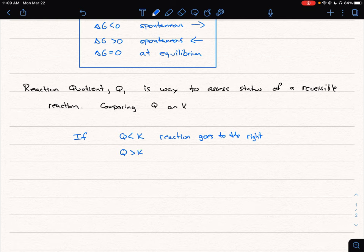If Q is greater than K, then our reaction goes to the left. We're going to have to make Q a smaller number, and so we need more reactants, less products.